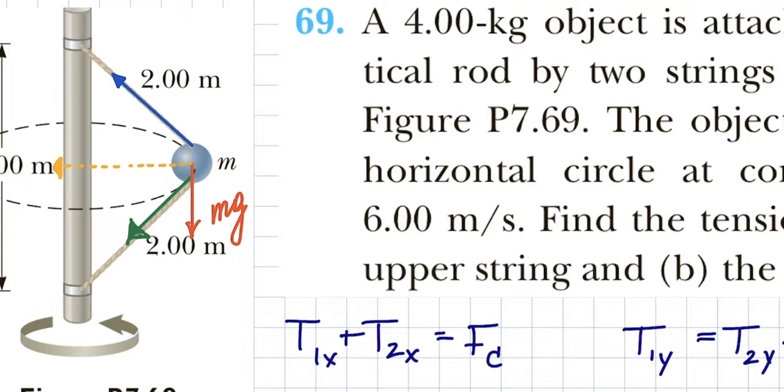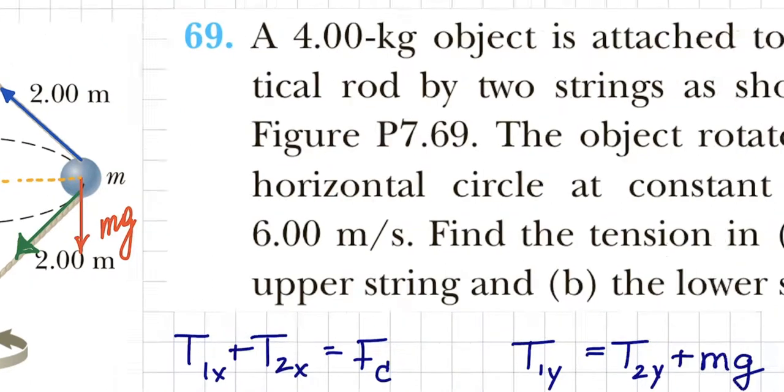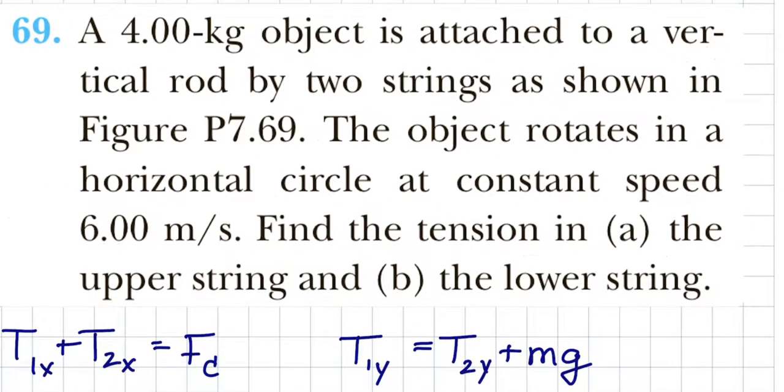Those two are counteracted by the vertical part of the upper rope. So here's what I'm saying: the tension in the vertical rope—I mean in the upper rope—the vertical part of the tension in the upper rope equals the vertical part of the second tension plus mg.